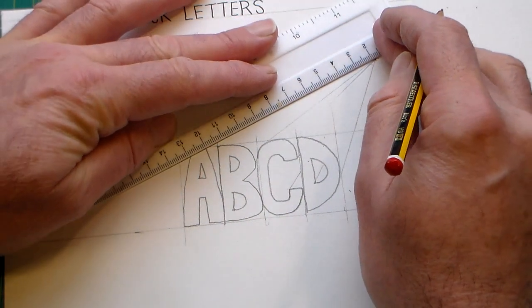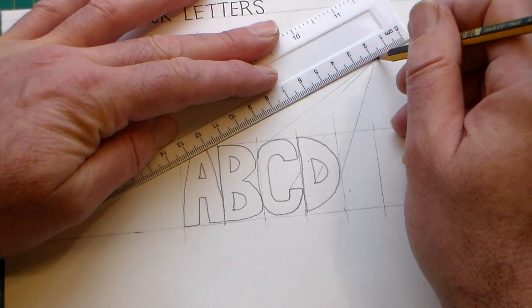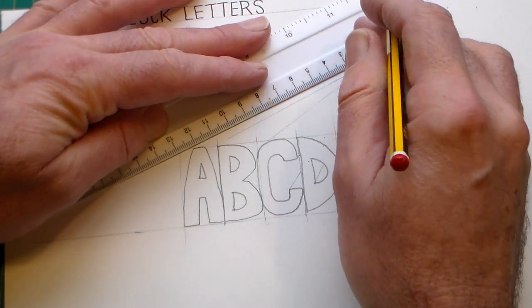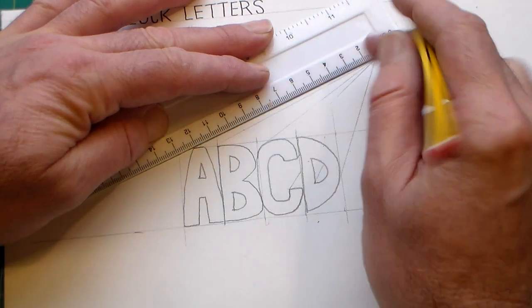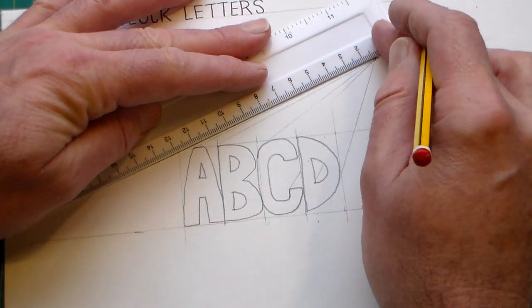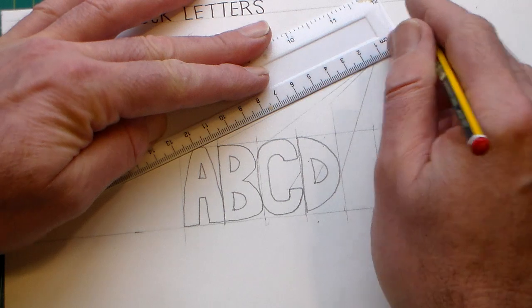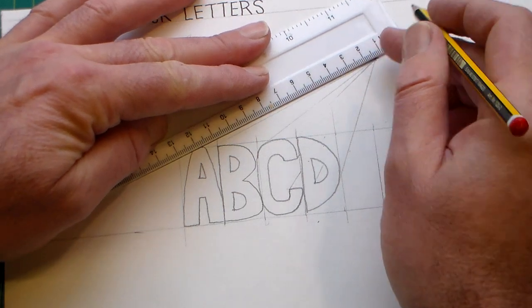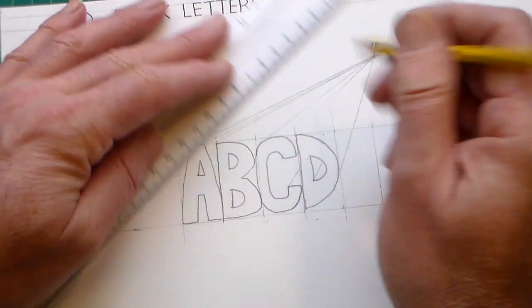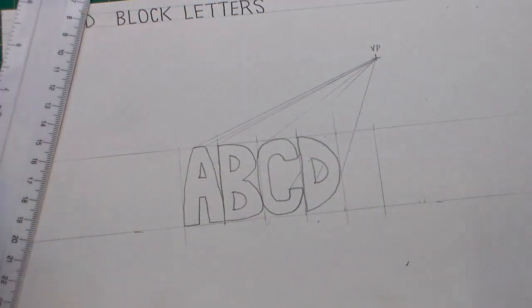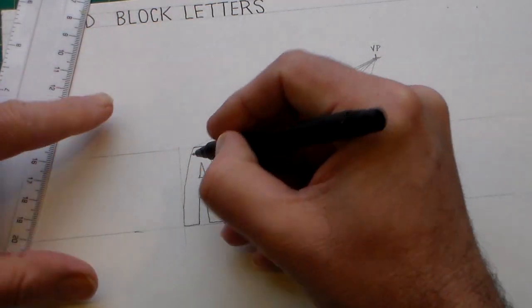So if we go from the ruler there to there. So what I can do now is...